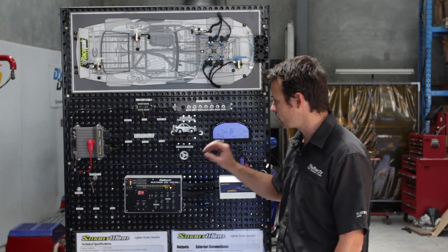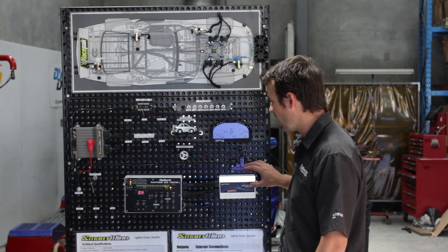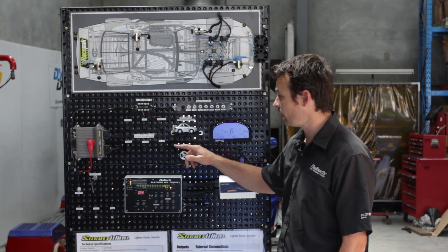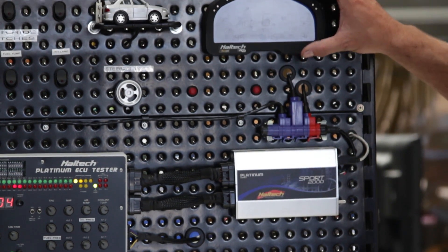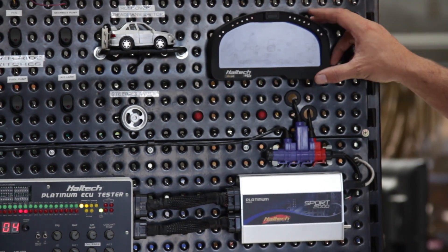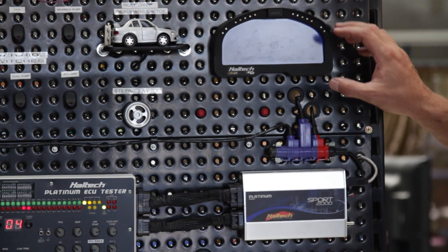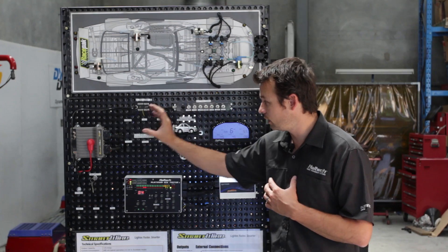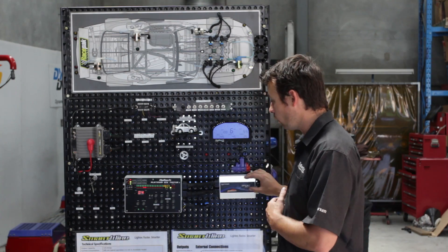In addition to receiving information from the Haltech ECU, the RacePak SmartWire can also talk to the Haltech RacePak Dash. So in the Dash here we can display all of the states of anything connected to either the SmartWire or the Haltech.